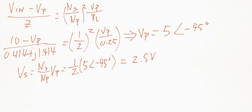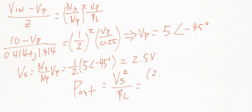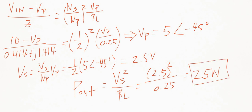Now that we have the secondary voltage, we can find the power out using Ohm's law: P = V² over R. Plugging in the numbers, I get 25 watts. And that is the answer.